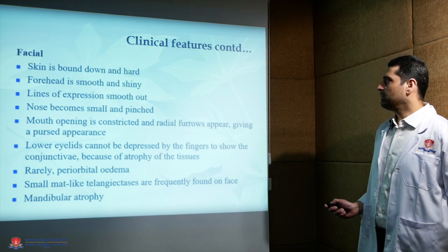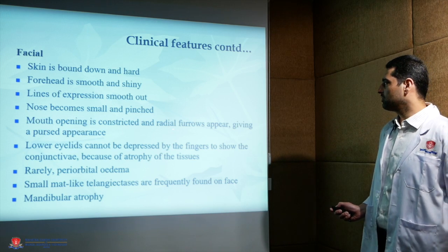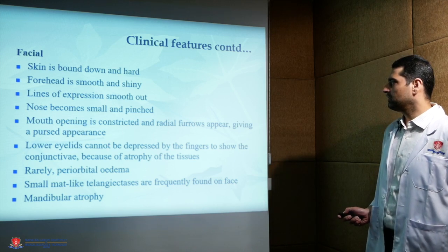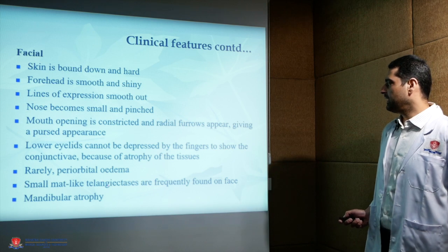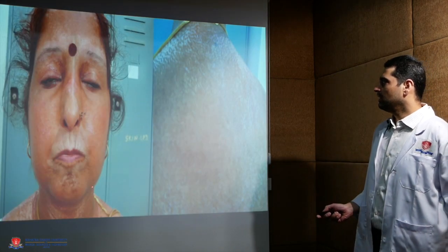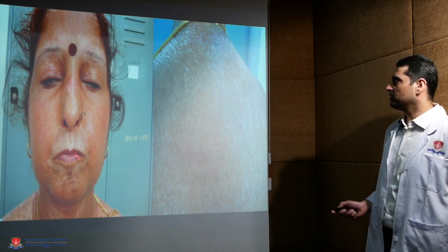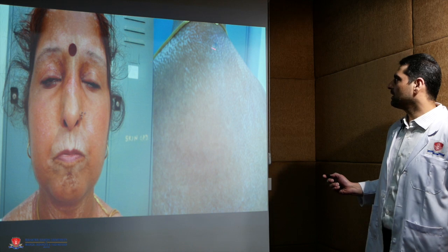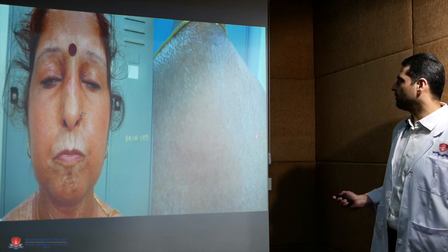The nose becomes small and pinched. Mouth opening is constricted and shows radial furrows, giving a pursed appearance. There could be periorbital edema or mat-like telangiectasia. The tapering of the nose and radial furrows along with depigmentation can be appreciated, and over the back, salt and pepper hypopigmentation is visible.